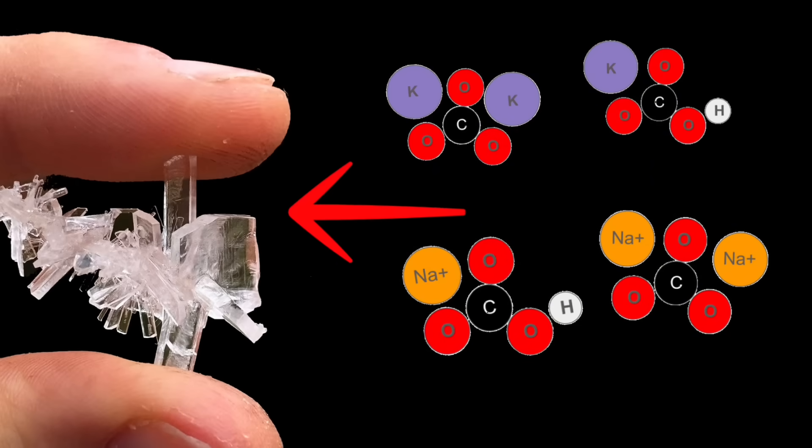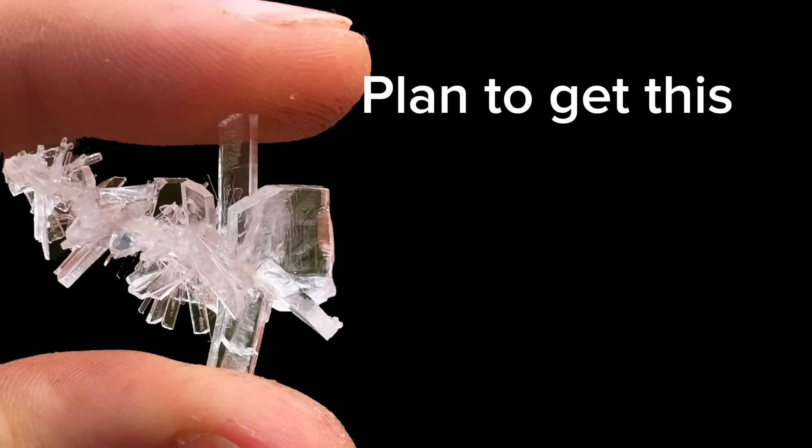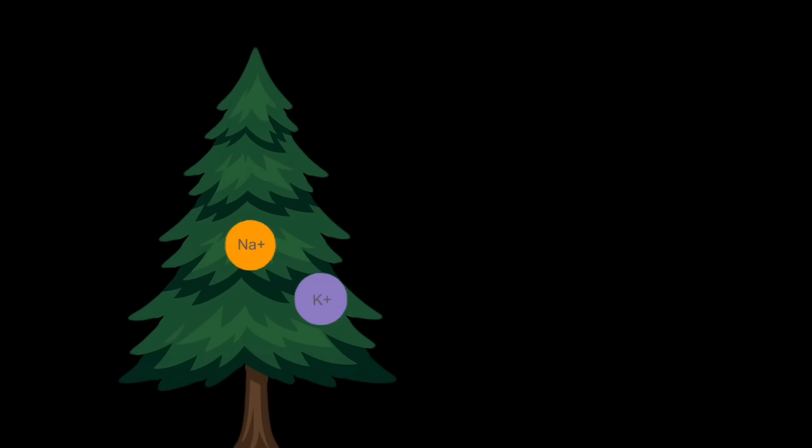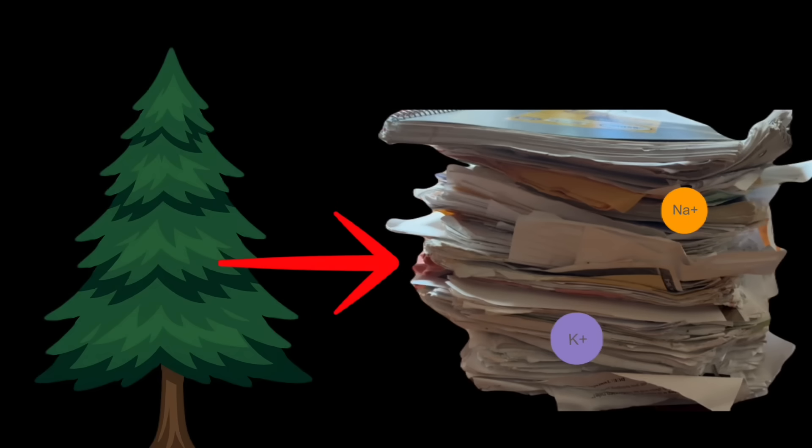These ions can form compounds that crystallize very easily. So essentially what my plan is, is to use these ions sucked up by the parent tree, which are now bound within the paper, to essentially grow some homework crystals.